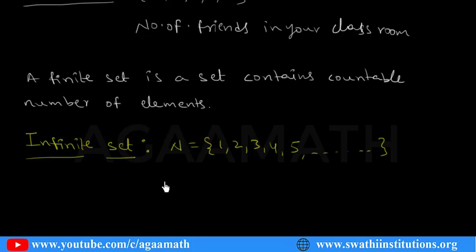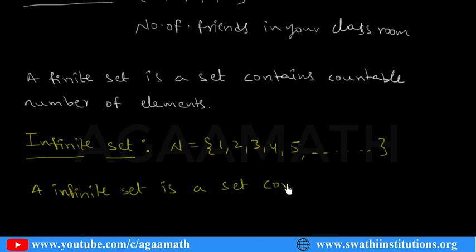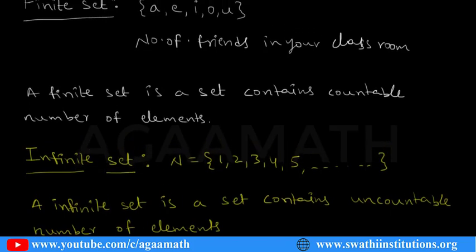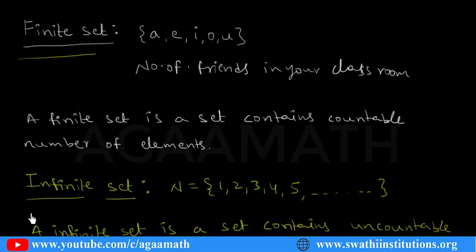The set of integers, the set of whole numbers — all these are examples of infinite sets. An infinite set is a set where we cannot say how many elements it contains — uncountable number of elements. Such a set is said to be an infinite set. So we have learnt two sets now: one is finite and another is infinite.